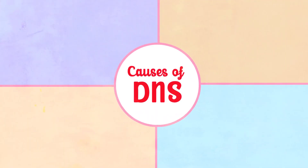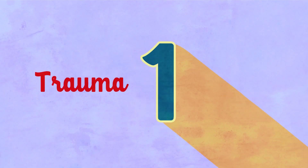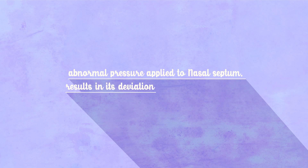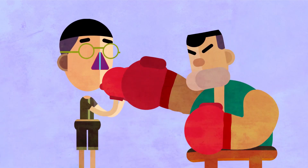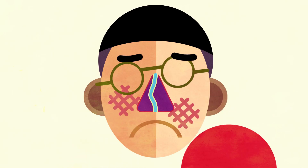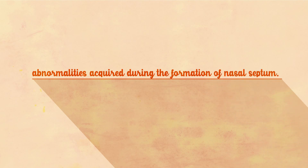Causes of DNS — there are four important causes. Number one is trauma. Any abnormal pressure applied to nasal septum results in its deviation to one side or another. For example, being hit by a boxer on the nose. Number two is developmental, or abnormalities acquired during the formation of nasal septum.